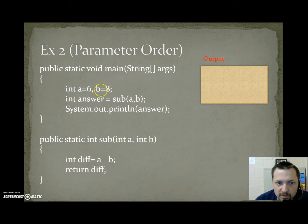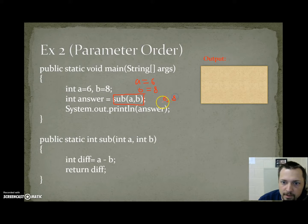Parameter order. So this one's going to be our first example for parameter order. Running with the same program, but we're doing a subtraction instead of an add. So a equals 6, b equals 8. Here, I'm making a call to the sub method, and I'm passing a comma b. I'm not really passing a comma b. I'm passing the value 6 comma 8.